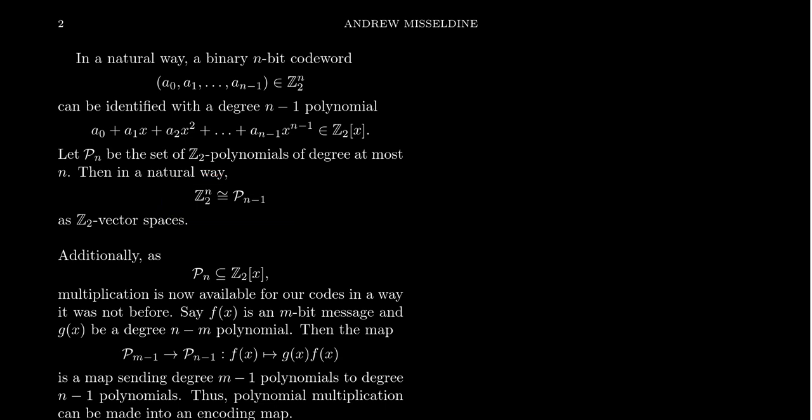So instead of writing a vector like this, we could write it like a polynomial. And both of those are ways to represent binary code words. But what's the advantage of thinking about it now as a polynomial? I mean, after all, the notation of a vector is much more compact. Why would we want to add some indeterminant?